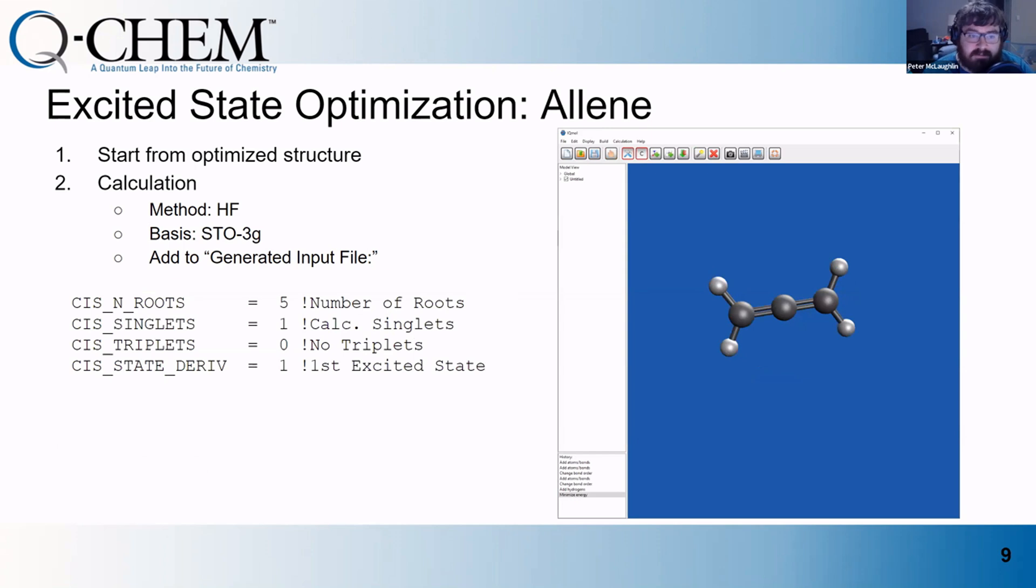Next, you'll do an excited state optimization of Allene. I suggest starting with your ground state optimized structure, and so you can do that. This is how you add the excited state optimization, in which we're going to do CIS, since we're doing Hartree-Fock. You'll do five roots, and then you'll want to only calculate singlets. You don't want the triplets in your calculation. The CIS state derivative is telling Q-Chem which excited state you want to optimize. This will allow you to optimize the excited state potential energy surface of this molecule.